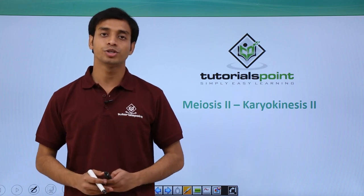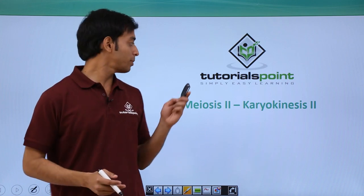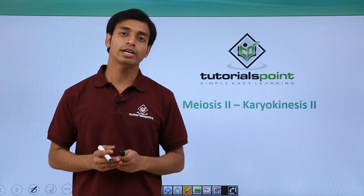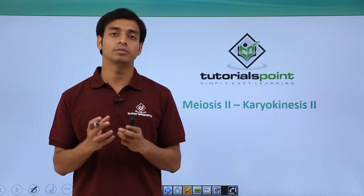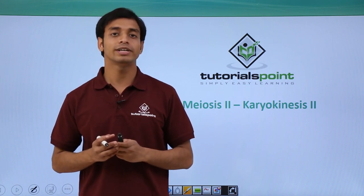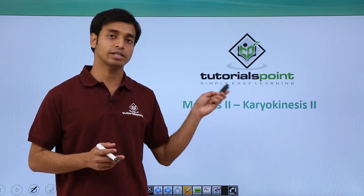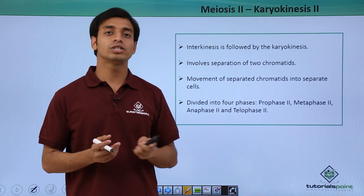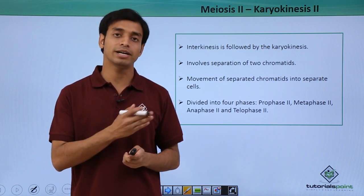Hello everyone, welcome to Tutorials Point. In this video we are going to talk about Meiosis 2, the Karyokinesis portion. In Karyokinesis 2, the nucleus or the nuclear part of the cells is going to divide. Let us see what are the different activities a cell is performing during Karyokinesis 2 of Meiosis 2, after the process of interkinesis, which is a small pause that may or may not happen between Meiosis 1 and Meiosis 2.